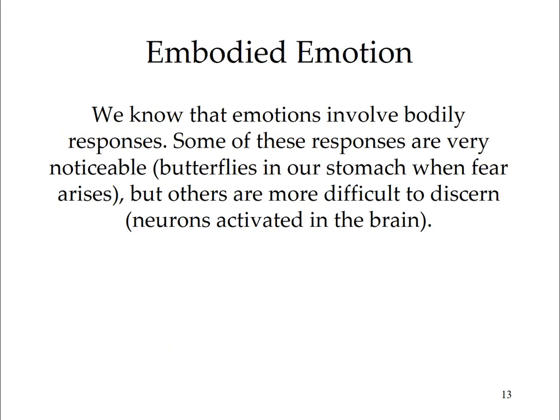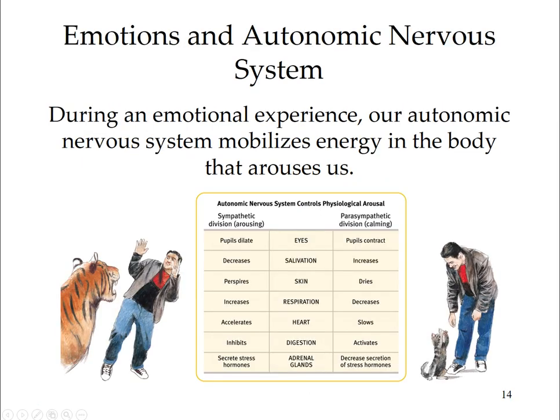The autonomic nervous system controls arousal. Some bodily responses are very noticeable — butterflies in the stomach when fear arises — while others are more difficult to discern, such as neurons activating in the brain. During emotional experience, our autonomic nervous system mobilizes energy in the body. In an emergency, the sympathetic nervous system mobilizes the fight-or-flight response, directing the adrenal glands to release hormones that increase heart rate, blood pressure, and blood sugar. Other changes include tense muscles, dry mouth, dilated pupils, slowed digestion, and increased sweating. The parasympathetic nervous system calms the body after a crisis has passed.